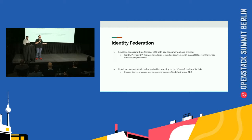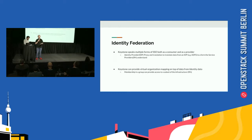It allows you to do an identity proxy coming from your Active Directory Federated Services, and translate that to an OpenID Connect or to a Keystone token that OpenStack can talk to, depending upon what your service providers need.